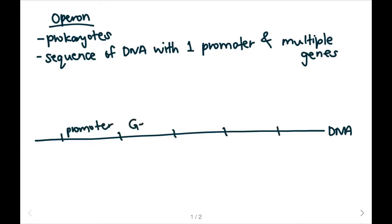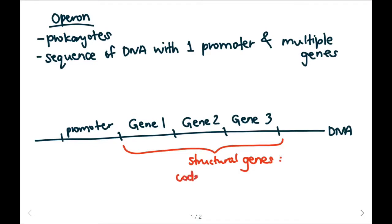So here we'll have gene 1, gene 2, and gene 3. And since these genes are located right next to each other, we're going to call them structural genes because they code for proteins with similar functions.